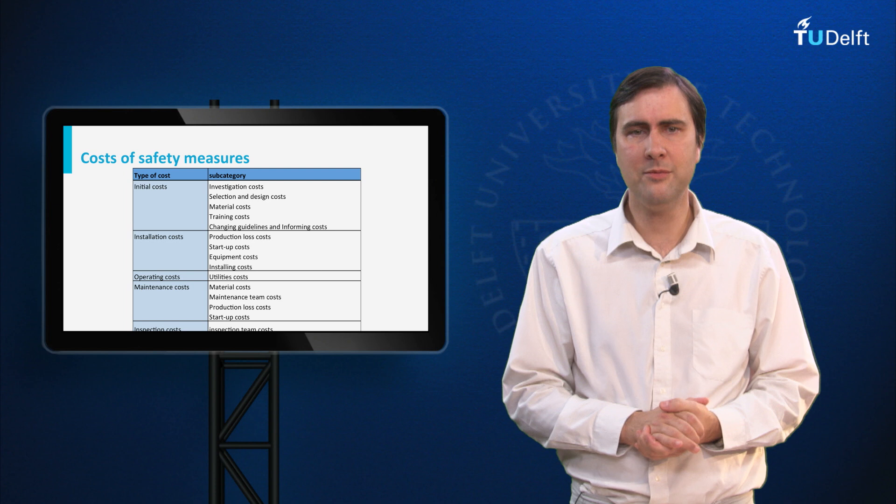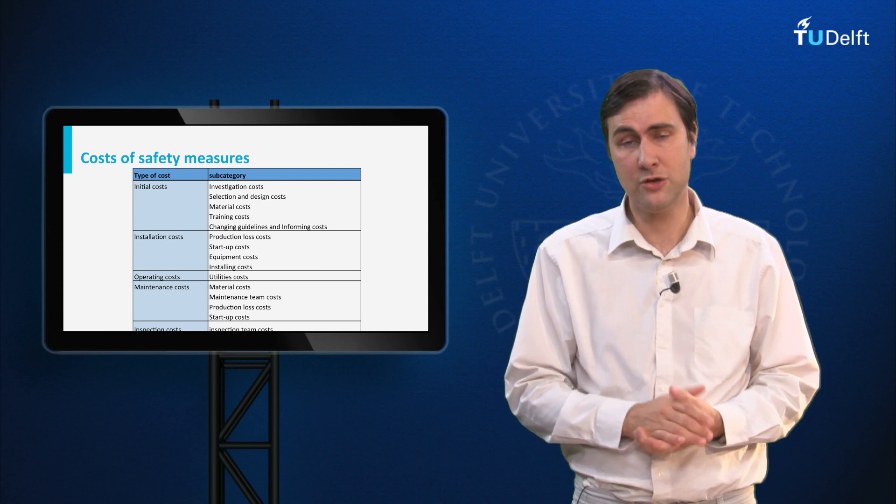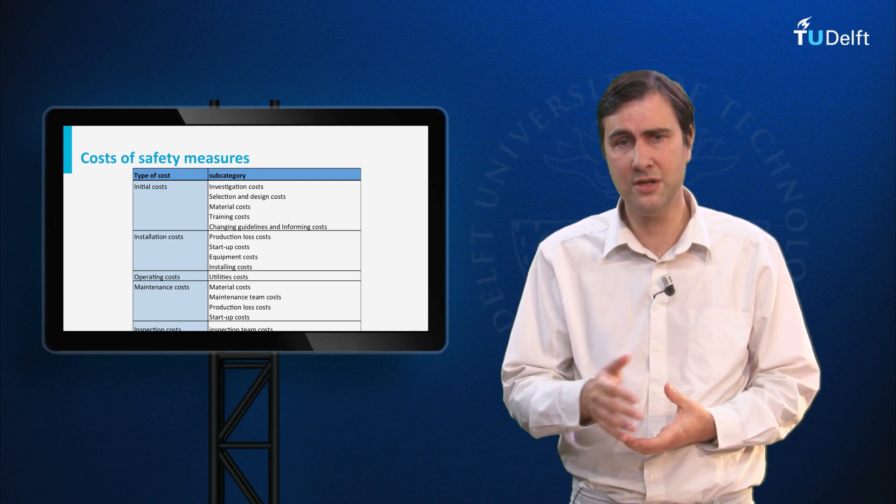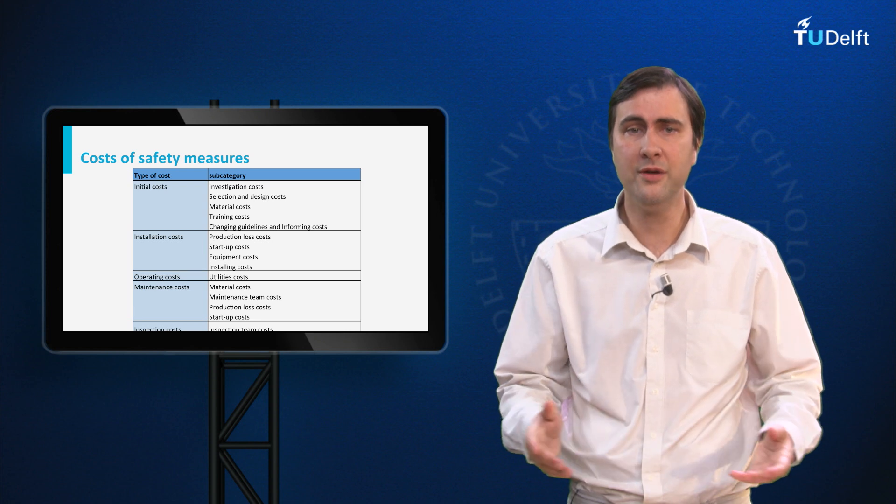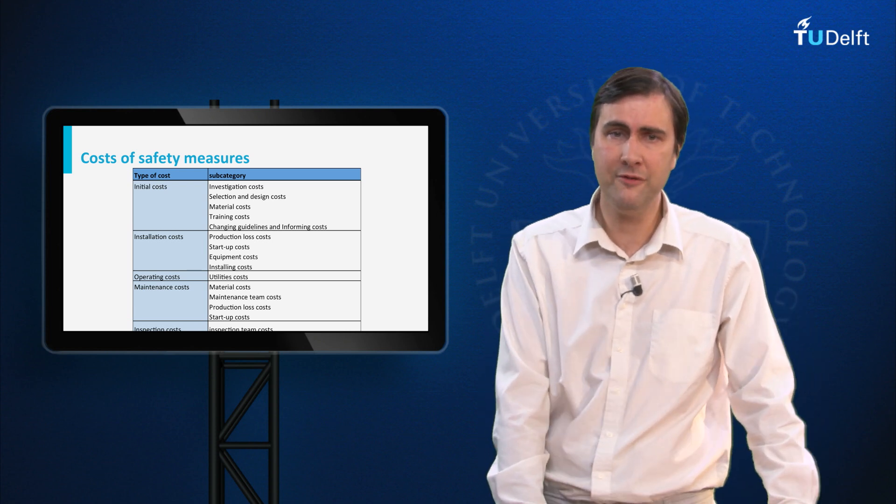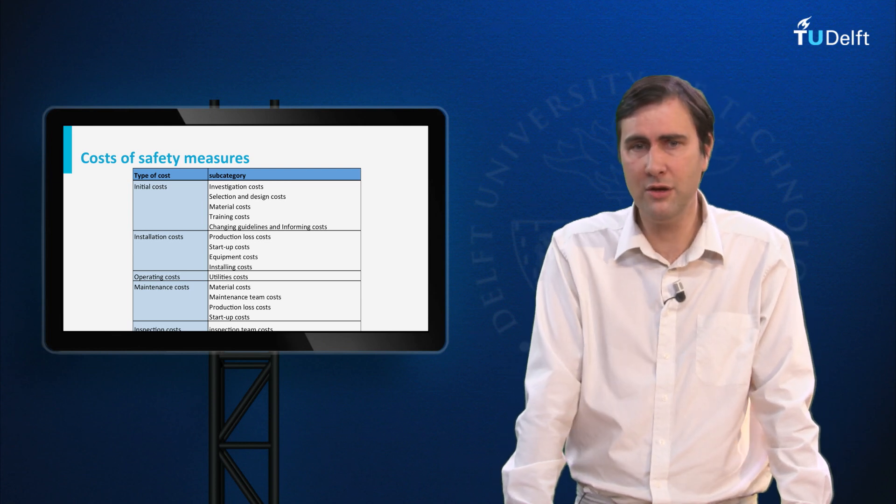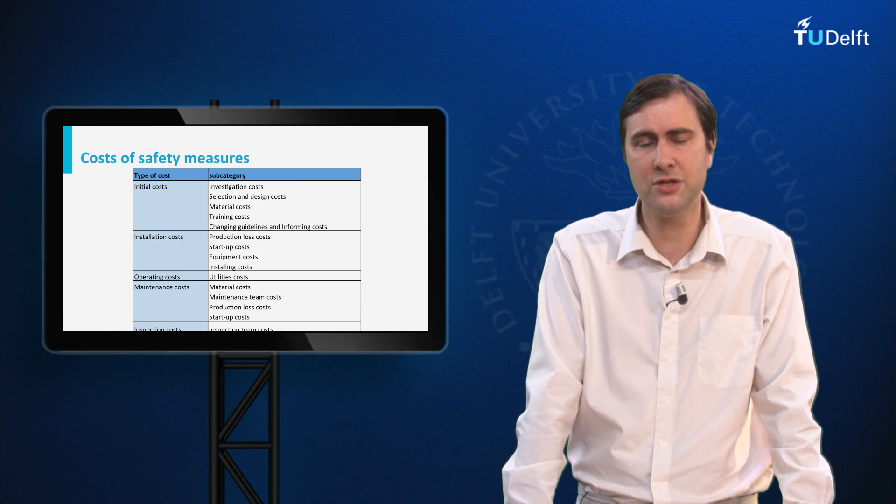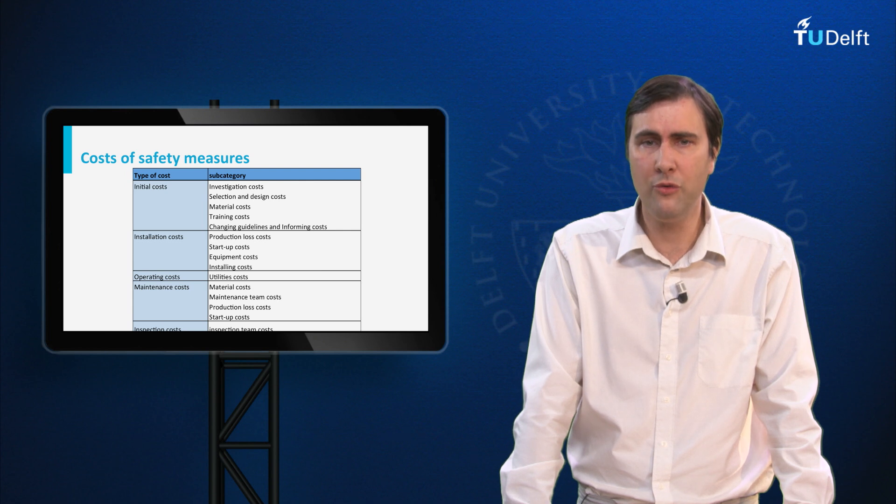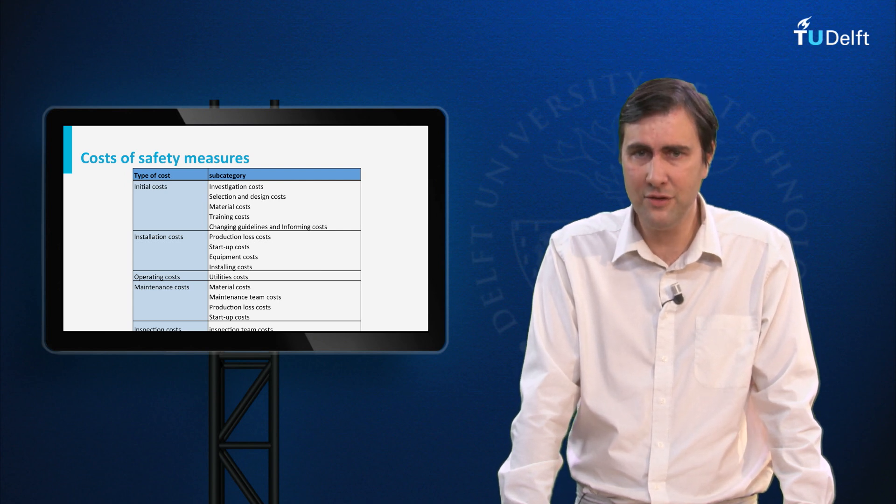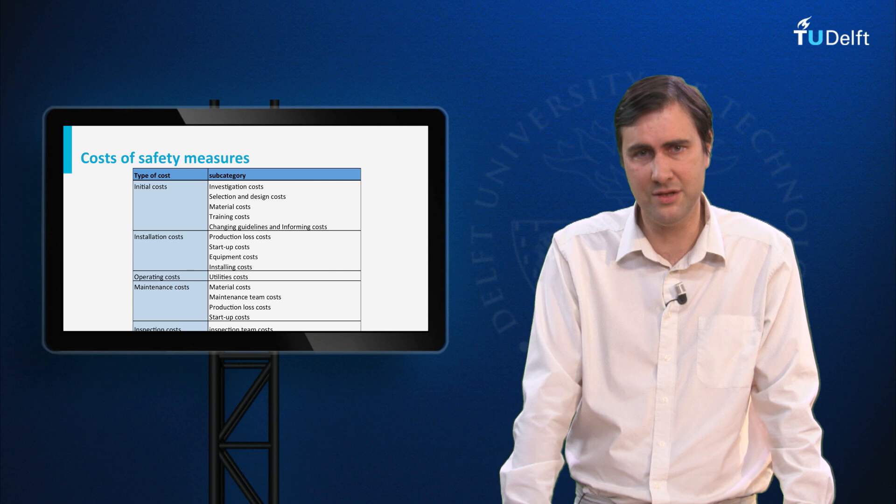These costs are evidently represented by negative cash flows. Some costs, for example the initial costs and the installation costs, occur in the present and thus do not have to be discounted, while other costs, for example the operating costs, the maintenance and inspection costs, they occur throughout the whole remaining lifetime of the facility and thus they will have to be discounted to the present.